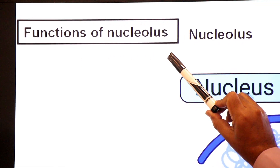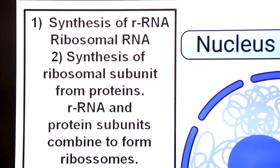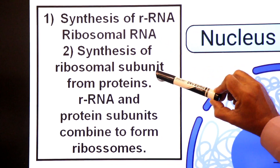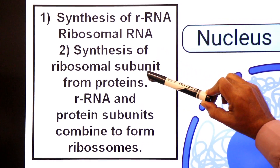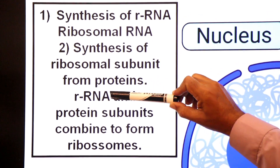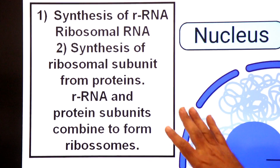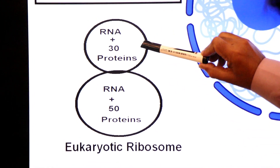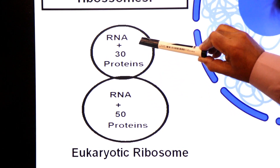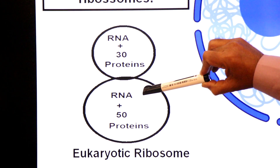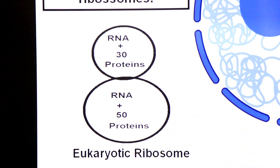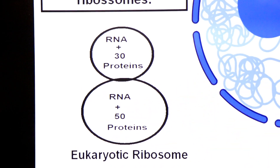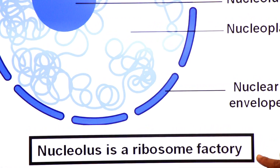The functions of the nucleolus include: first, the synthesis of ribosomal RNA; second, the synthesis of ribosomal subunits from proteins. The ribosomal RNA combines with proteins to form ribosomal subunits. In eukaryotic ribosomes, the smaller subunit is composed of RNA plus about 30 different types of proteins, and the larger subunit is RNA plus about 50 proteins. Because of this, the nucleolus is called the ribosome factory of the cell.